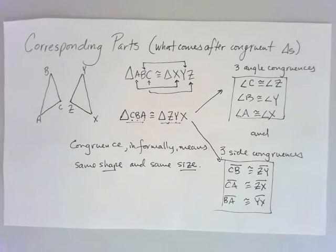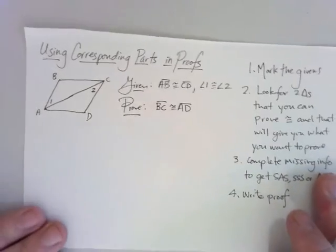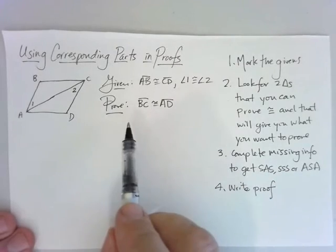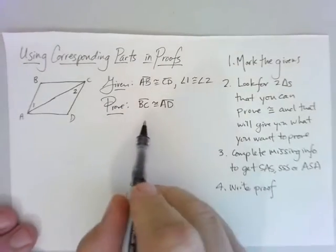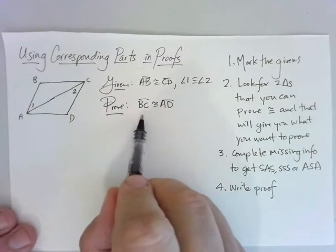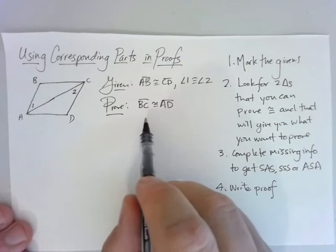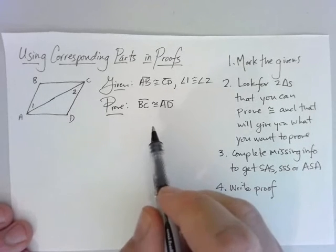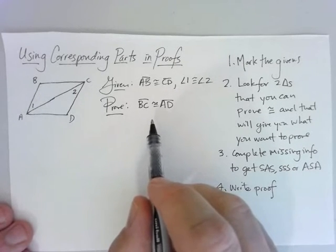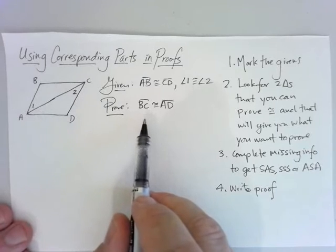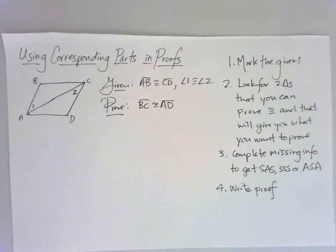So let's look at how we actually use this when we're doing proofs. Here's an example. Notice that we're not asked to prove triangles are congruent — we're asked to prove that BC is congruent to AD. Pretty much all of our proofs in this unit are going to be triangle congruence proofs. We're going to have to prove triangles are congruent in order to get something like this, so don't think we're done with triangle congruence.